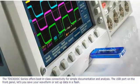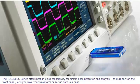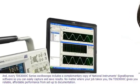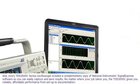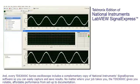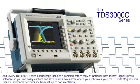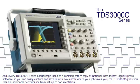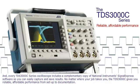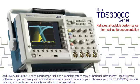The USB port on the front panel lets you save your waveform or setup data in a flash. And every TDS 3000 C-Series oscilloscope includes a complimentary copy of National Instruments' SignalExpress software so you can easily capture and save results. No matter where your job takes you, the TDS 3000 C-Series gives you reliable, affordable performance, from setup to documentation.